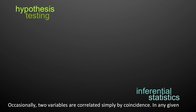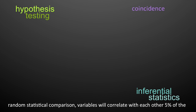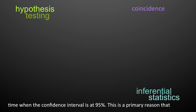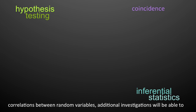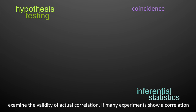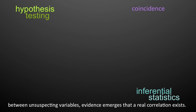Occasionally, two variables are correlated simply by coincidence. In any given random statistical comparison, variables will correlate with each other 5% of the time when the confidence interval is at 95%. This is the primary reason that repeating experiments is so important. While it is not uncommon to find correlations between random variables, additional investigations will be able to examine the validity of actual correlation. If many experiments show a correlation between unsuspecting variables, evidence emerges that a real correlation exists.